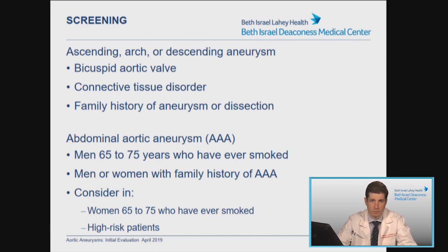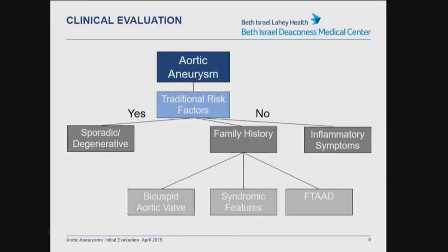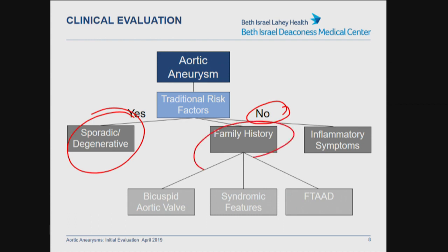For example, those with a high burden of atherosclerosis. In terms of the clinical evaluation, when you're seeing someone for the first time with a new diagnosis of aortic aneurysm and trying to figure out the underlying etiology, you start by assessing their traditional risk factors. Are they older age? Are they male? Do they have atherosclerosis or hypertension? Those are more likely to be sporadic or degenerative in nature. If they don't have those traditional risk factors, consider whether they have a strong family history or inflammatory symptoms — although rare, it's something you don't want to miss, as it would lead to a completely different treatment pathway focused on anti-inflammatories.